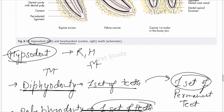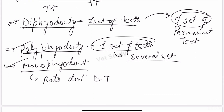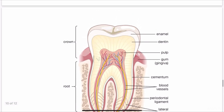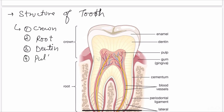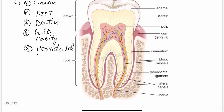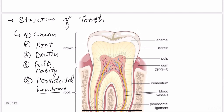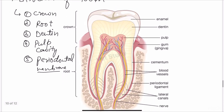Now let's discuss the structure of a tooth. The structure of a tooth has mainly five components. The first is the crown, sometimes called the body. The second is the root. The third is the dentin. The fourth is the pulp cavity. The fifth is the periodontal membrane — you can also call it a ligament; in your book it is mentioned as membrane.